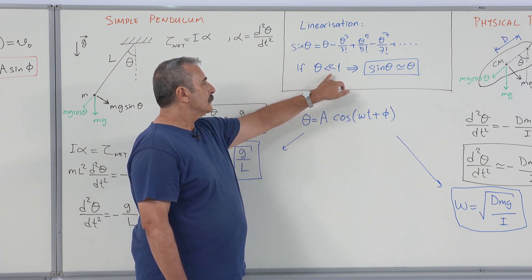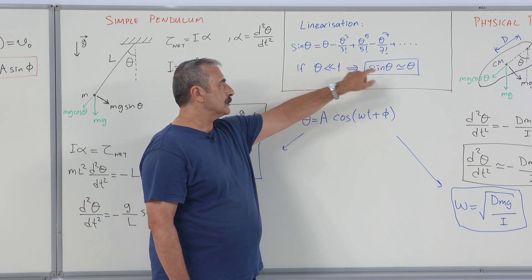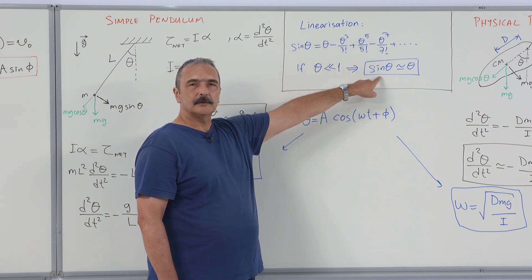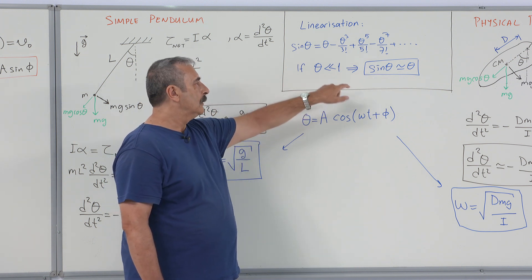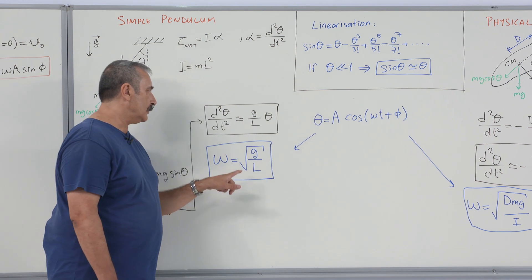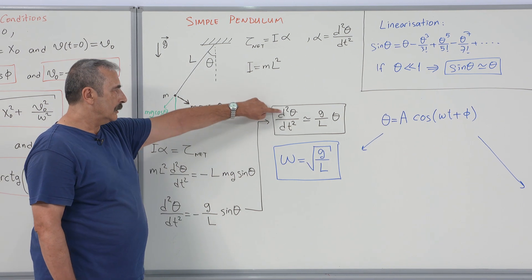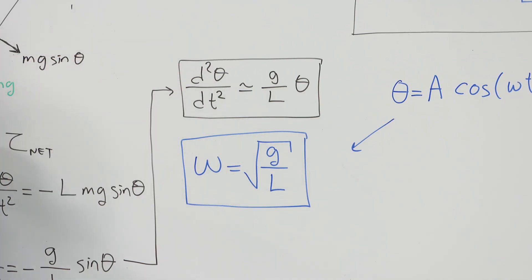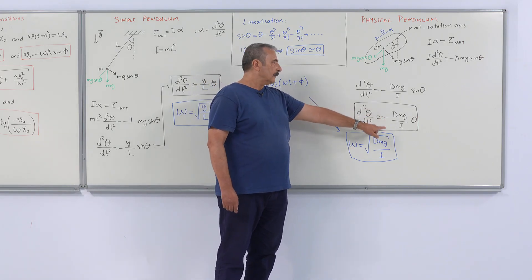Then for small angle, we can make such an approximation that higher order terms are negligible for theta much smaller than unity. Then approximating sine theta to theta for small angles, we will have linearized our equation of motion for simple pendulum, also for physical pendulum.